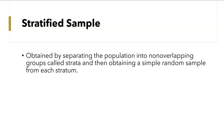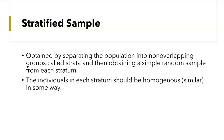These are called discrete groups — they don't overlap. Each individual is in one group, and then you take a simple random sample from each group. The individuals in each stratum should be homogenous, which means similar in some way. So your group should be similar; they should share characteristics.